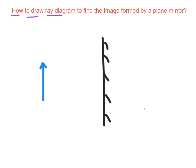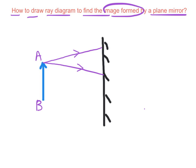How to draw ray diagrams to find the image formed by a plane mirror. Let the object be AB. First, direct two light rays from A to the mirror. And use law of reflection to draw the reflected light rays. Produce the reflected light rays backward. They will meet at point A prime, which is the image of A.